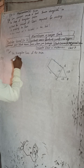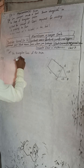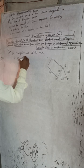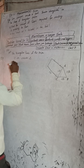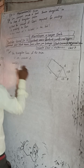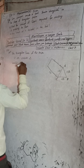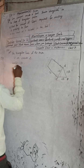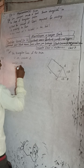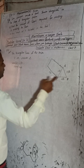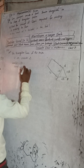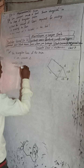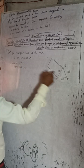The triangular base of the prism is an isosceles triangle — meaning two equal sides. The base b is equal to 6 feet, and the equal sides, denoted as small a, are each equal to 5 feet.